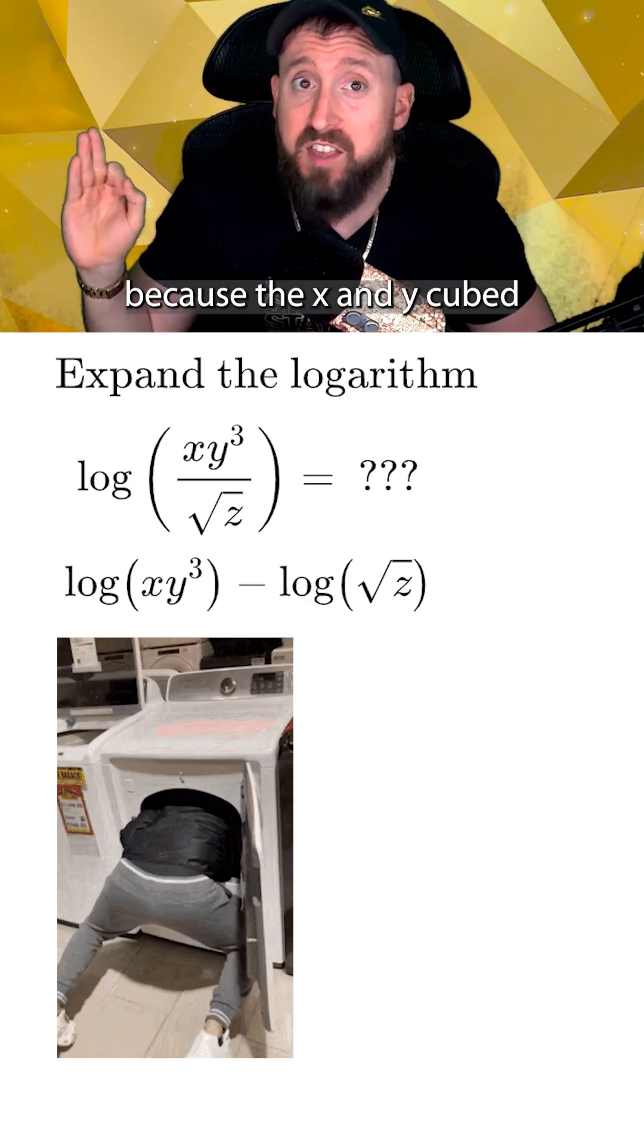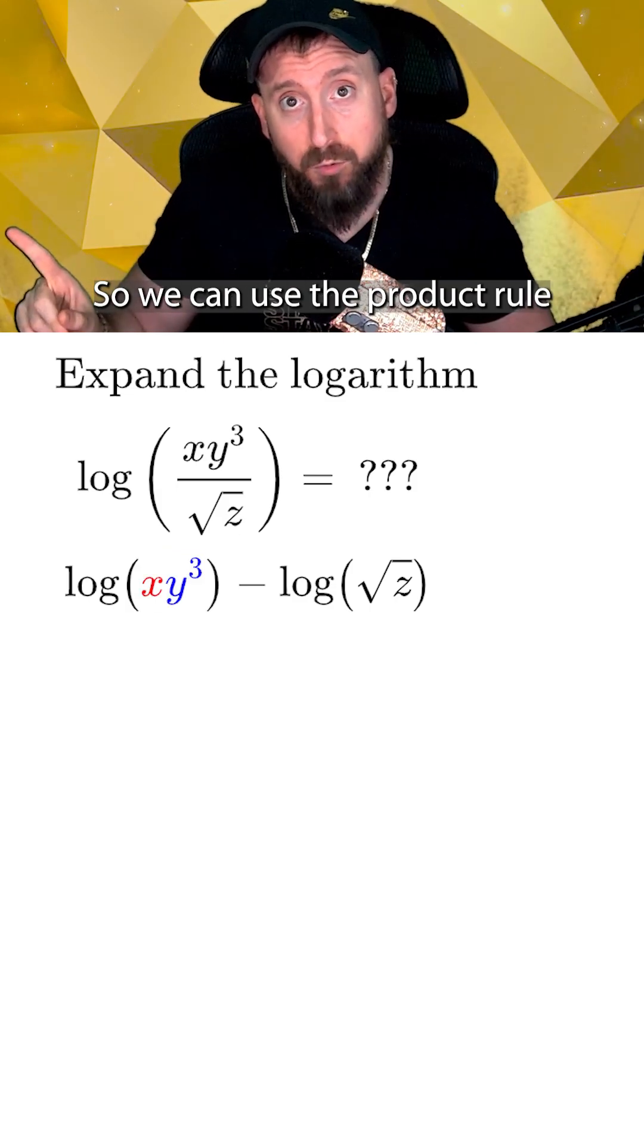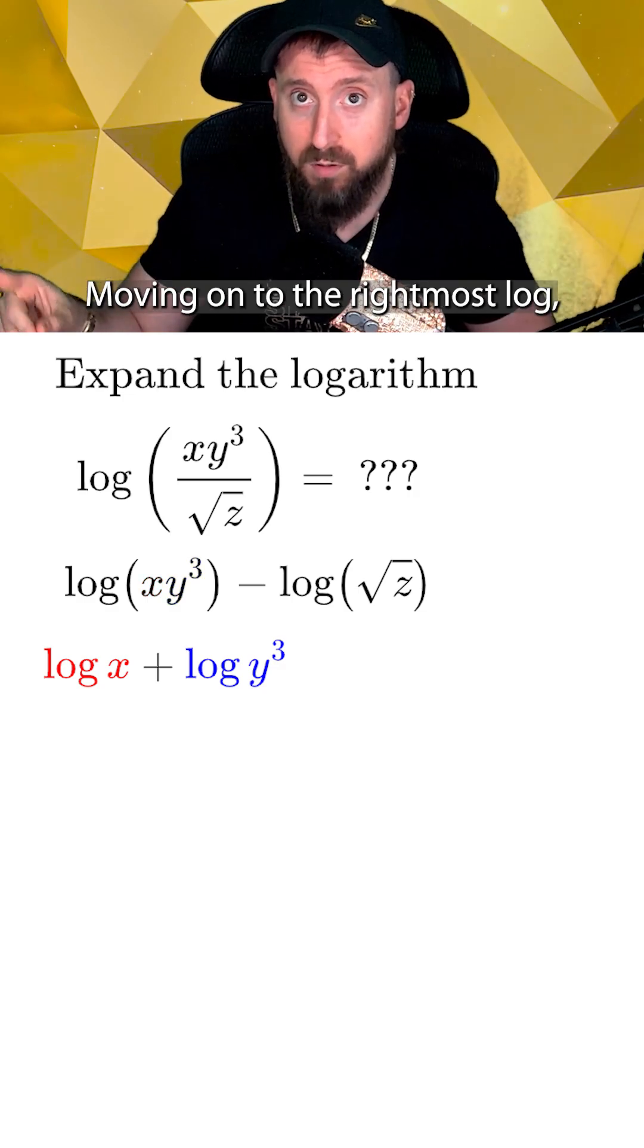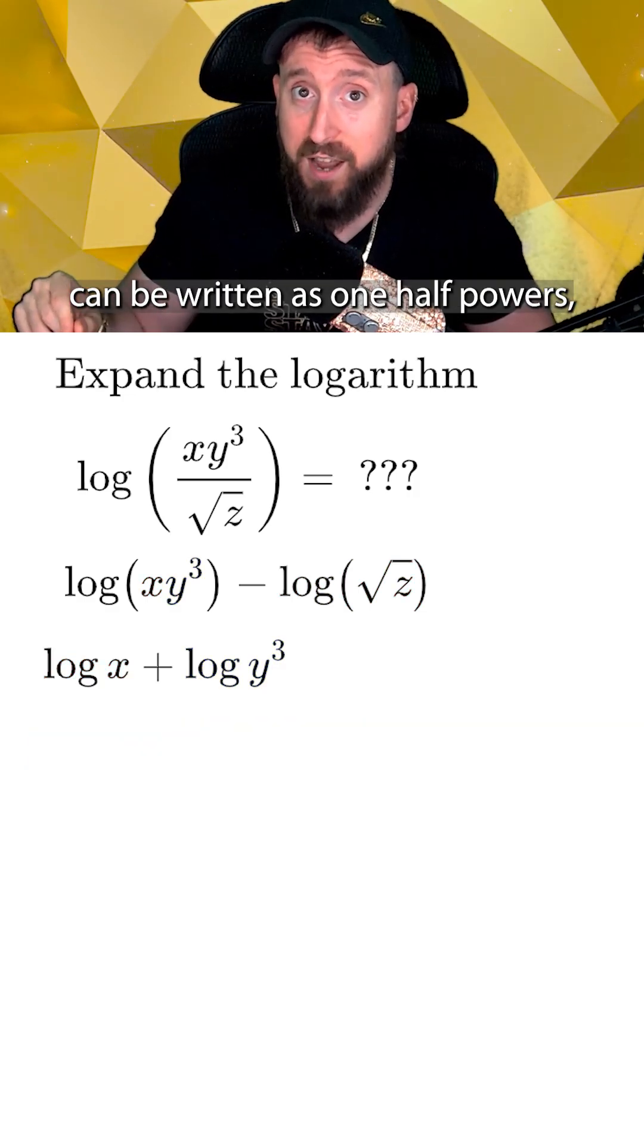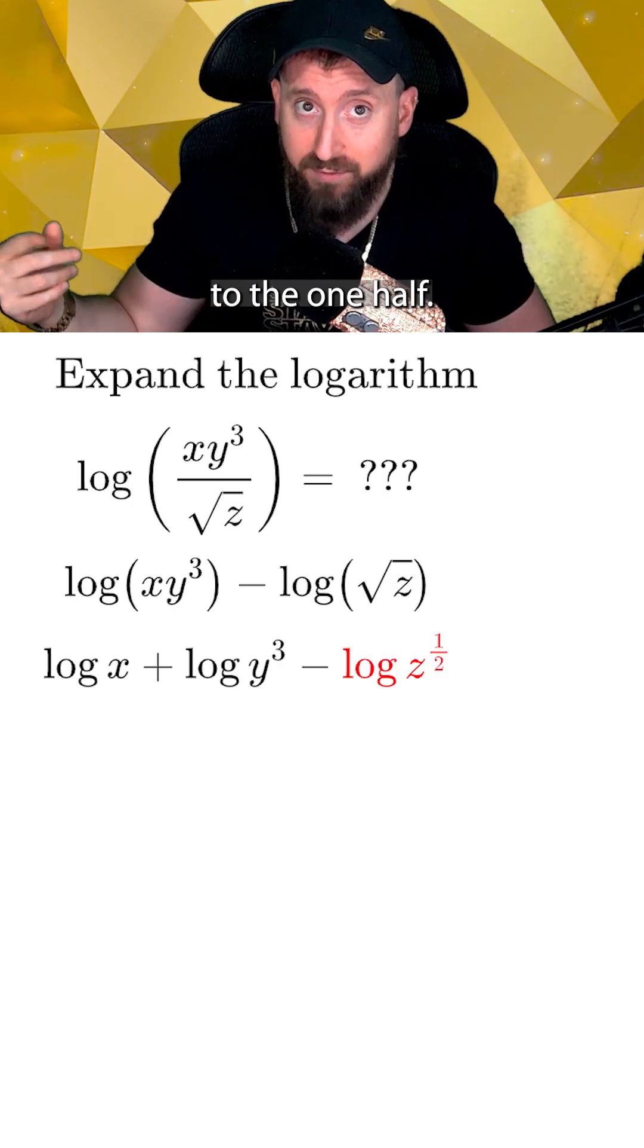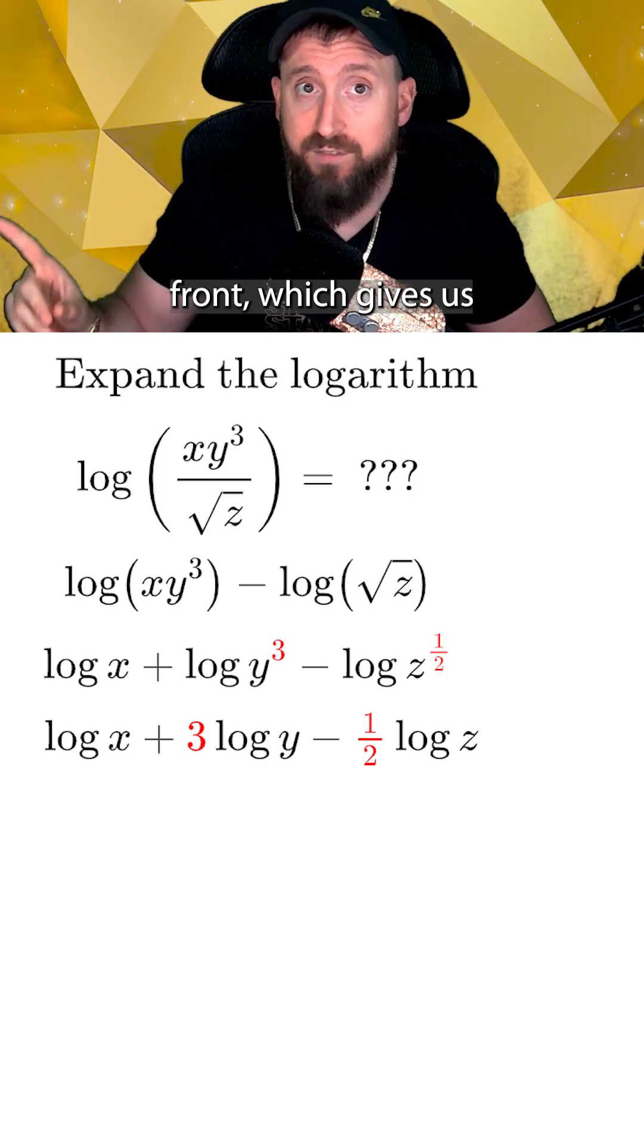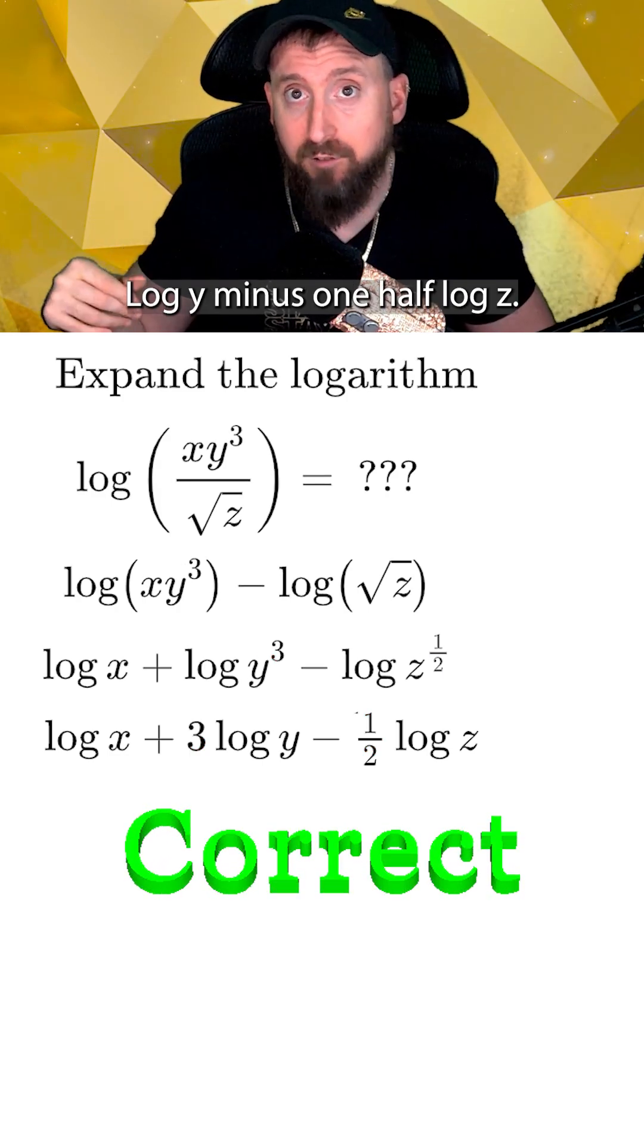But that doesn't mean we're stuck because the x and y cubed are still multiplying each other. So we can use the product rule to write that as the log of x plus the log of y cubed. Moving on to the rightmost log, we remember that square roots can be written as one half powers, which gives us the log of z to the one half. The last step is to take any of the exponents left and bring them out front, which gives us our final answer of log x plus three log y minus one half log z.